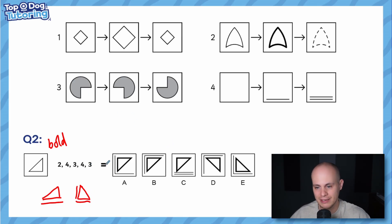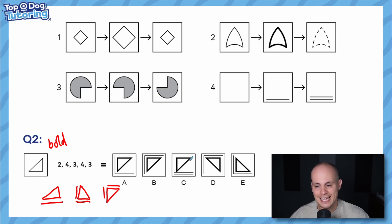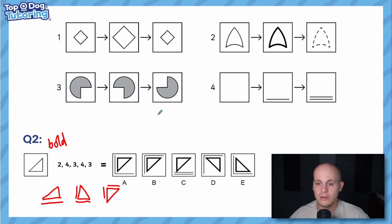Finally operation three rotates the whole thing again — the triangle is now facing a new direction, and both previously added lines have also rotated with it. They end up in specific positions based on when they were added relative to each rotation. It's really tricky to visualize in your head, but the answer is B.